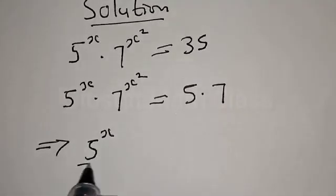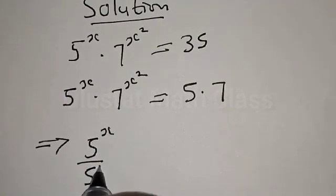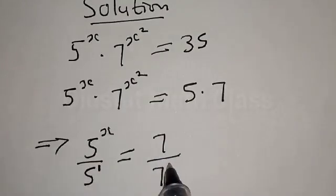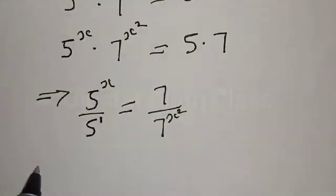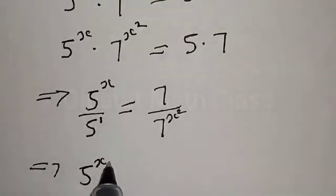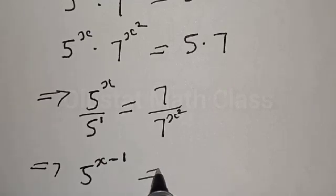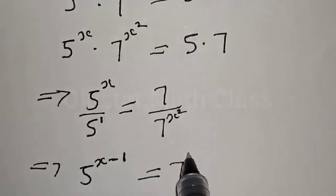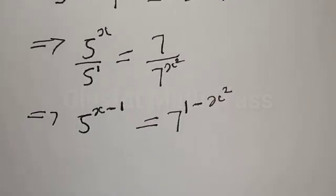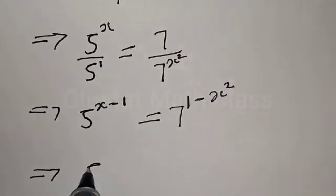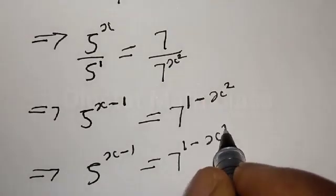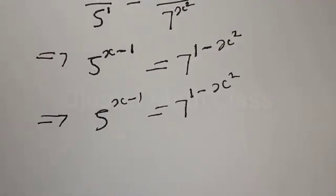This implies that we have 5 raised to power x divided by 5 raised to power 1, equal to 7 raised to power 1 divided by 7 raised to power x squared. This gives us 5 raised to power x minus 1 equal to 7 raised to power 1 minus x squared.